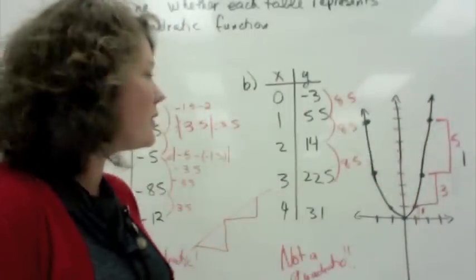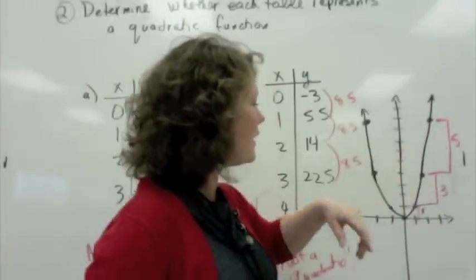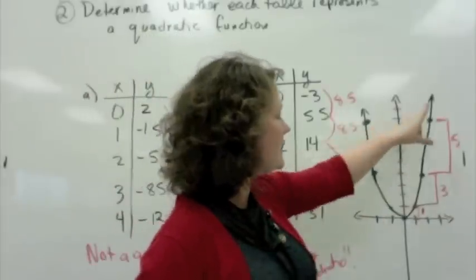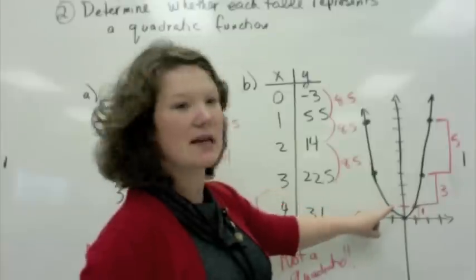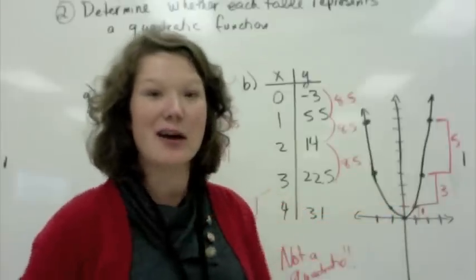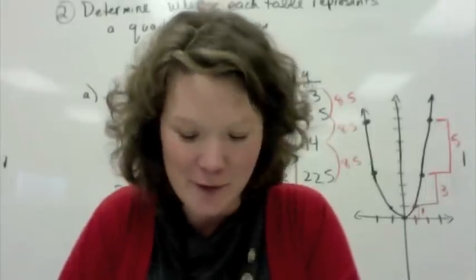So, when we're noticing that there's a consistent difference like this, and that the difference is the exact same on the other side of the vertex, we're pretty sure that we get a parabola.